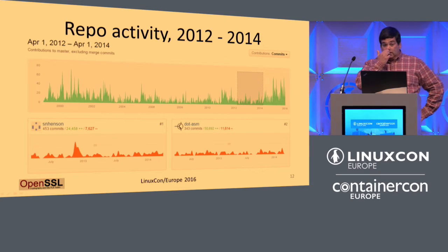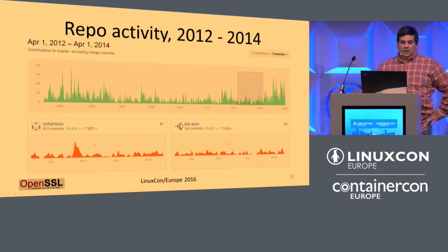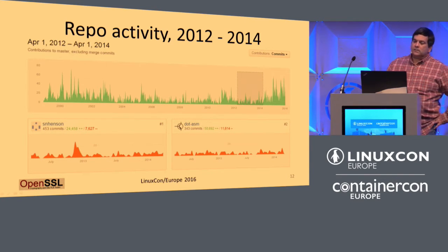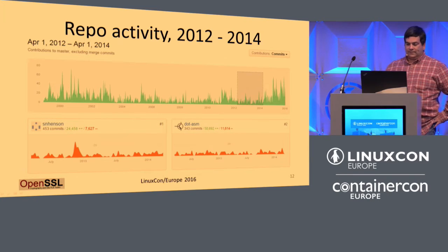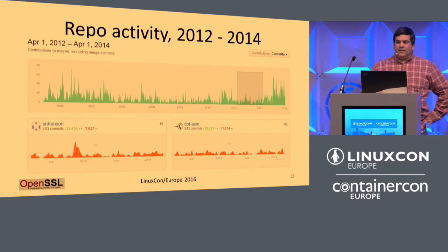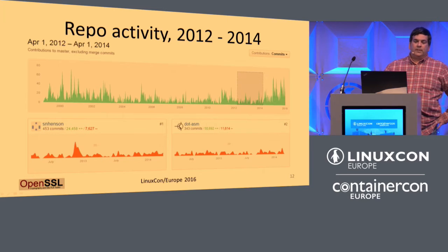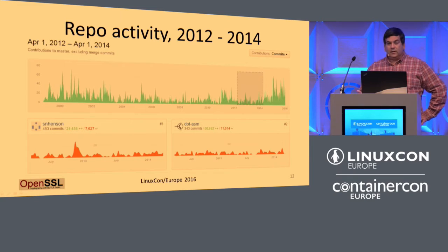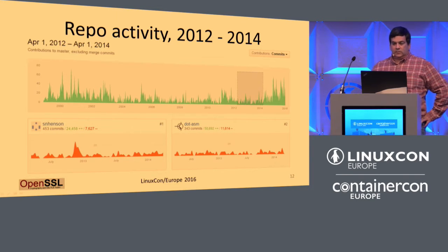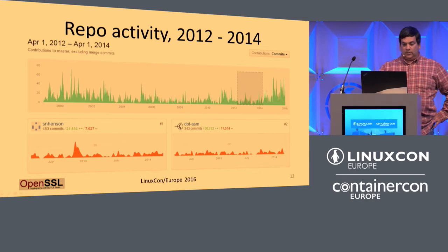Looking at GitHub stats for the two years prior to Heartbleed, the two top committers were Steve Henson and Andy. The next nearest committer had 100 commits less. So when I say it was two people running this, barely eking out a living, this is true. And this was the platform used for what was called e-commerce at the time — now we just call it the internet. It was severely underfunded, under-resourced, and over-committed.